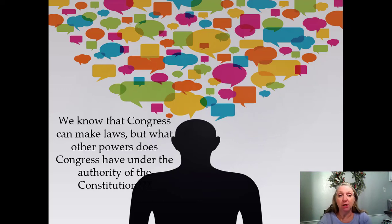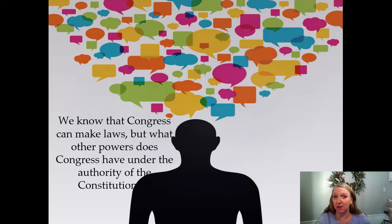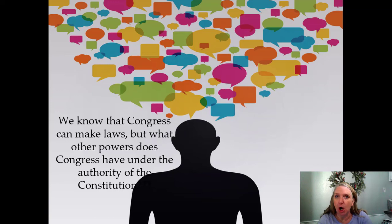We know that Congress can make laws. We learned that last semester when we looked at the Constitution and laid out the articles. We talked about the three powers of any government in the world: legislative, executive, and judicial. But what other powers does Congress have under the authority of the Constitution? What powers does the Constitution give Congress that fall under that umbrella of making laws, and are there things Congress can do outside the scope of making laws?